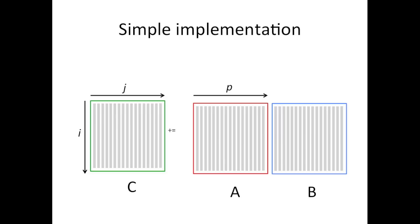J for the column in C in which you're working, and P for the column of A in which you're working, and therefore the row of B in which you're working. We already mentioned that we're storing matrices by columns. We're using column major order storage, and we're depicting that with these gray bars right here.